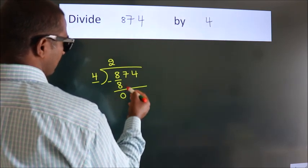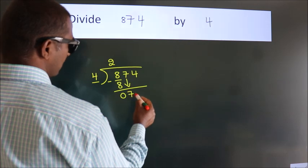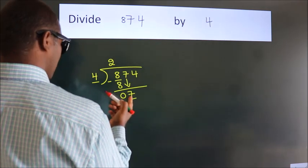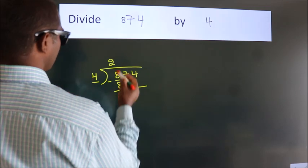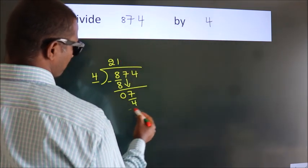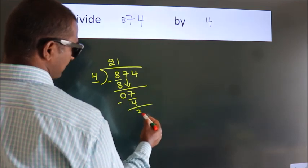After this, bring down the beside number. So 7 down. A number close to 7 in the 4 table is 4 times 1, which is 4. Now we subtract. We get 3.